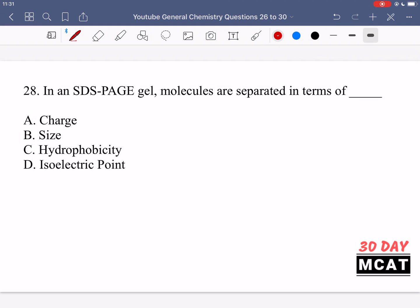In question 28 it says in an SDS-PAGE gel, molecules are separated in terms of what. So in an SDS-PAGE gel, what do we separate based on? Well, SDS is used as a denaturant which coats our proteins in a net uniform negative charge. Therefore we don't separate on charge because we eliminate charge. If everything has the same charge and we're controlling for charge, we're separating based on a different property, and the property is size.